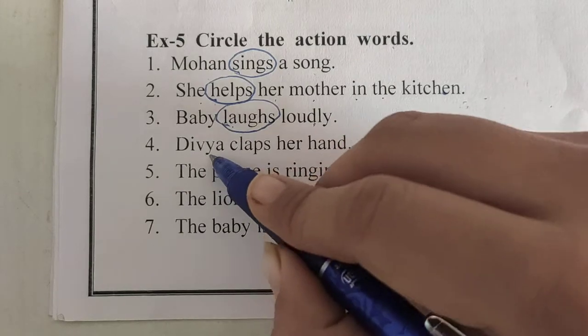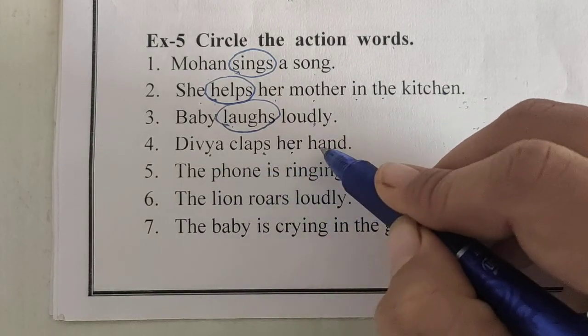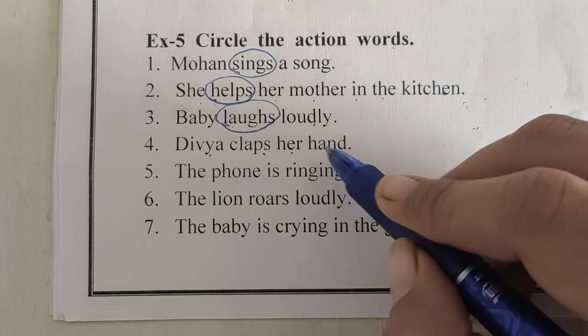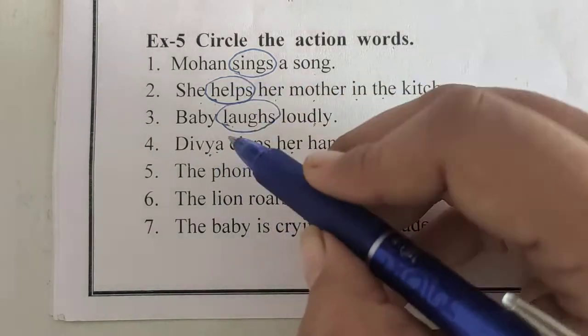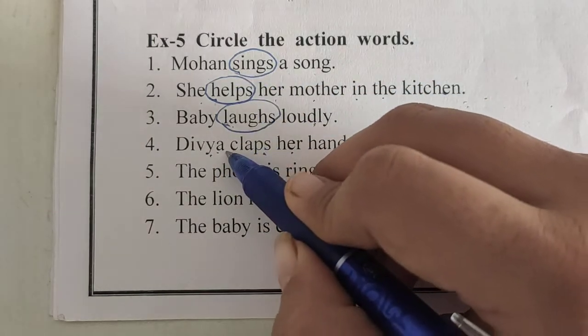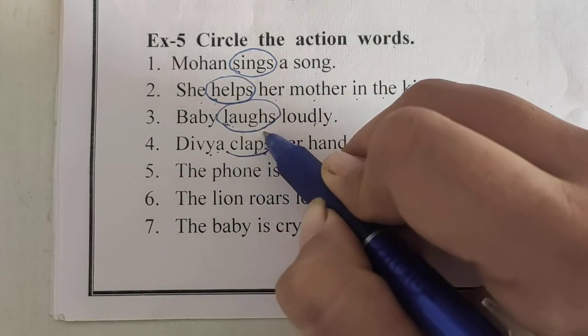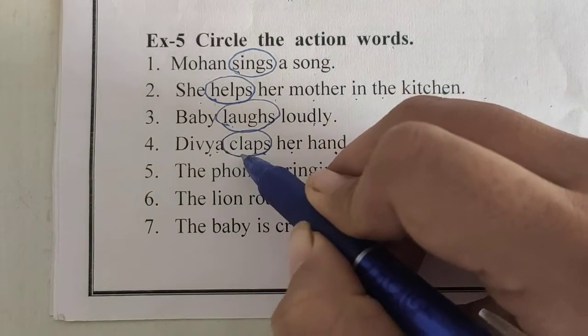Fourth: Divya claps her hands. In this sentence, what is Divya doing? Divya is clapping. So, 'claps' is an action word performed by Divya.